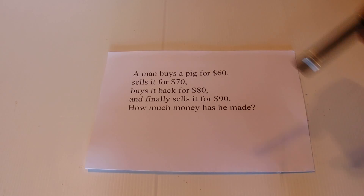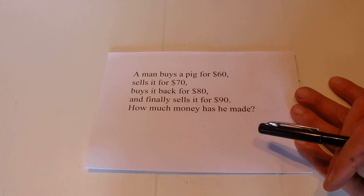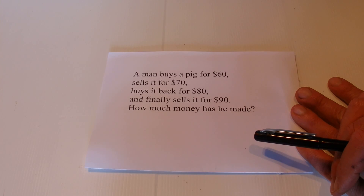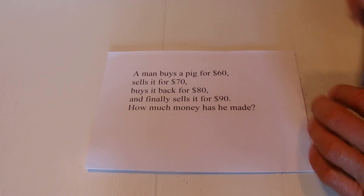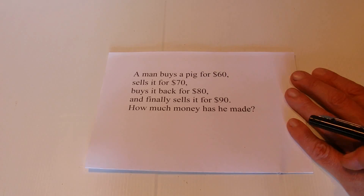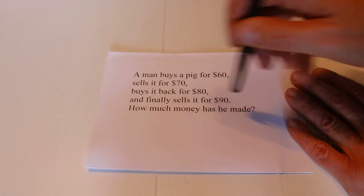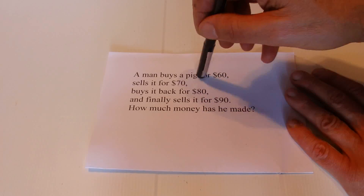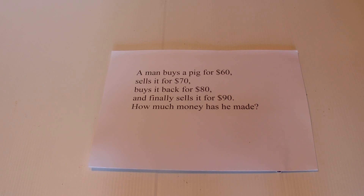If you want to think about the answer, press the pause button. Otherwise, I'm going to go straight into the answer. The most common answer is that the man makes $10, but that's not correct. He's actually made $20 from the sale of that pig. The first time he sells it he makes $10 — $70 less $60 — and the second time he sells it he makes $10 again — $90 less $80. So $10 and $10 is $20.